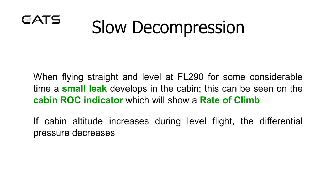When flying straight and level at flight level 290 for some considerable time, a small leak develops in the cabin. This would be seen on the cabin rate of climb indicator, which would show a rate of climb. If cabin altitude increases during level flight, the differential pressure decreases.